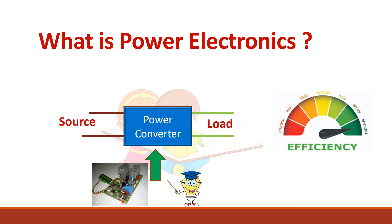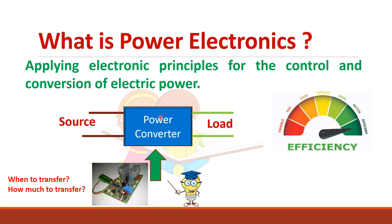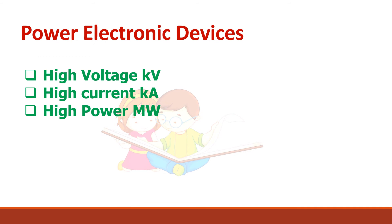This low power electronics tells you when to transfer the power and how much power to transfer. So power electronics is nothing but applying electronic principles for the control and conversion of electric power. Power electronic devices are normally rated at higher voltage — kilovolts, kiloamps — and in the megawatt range.